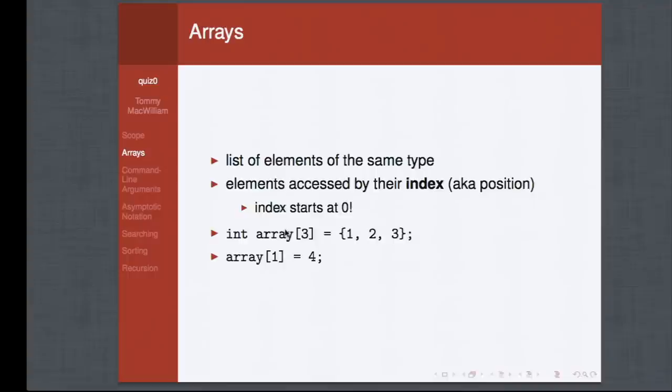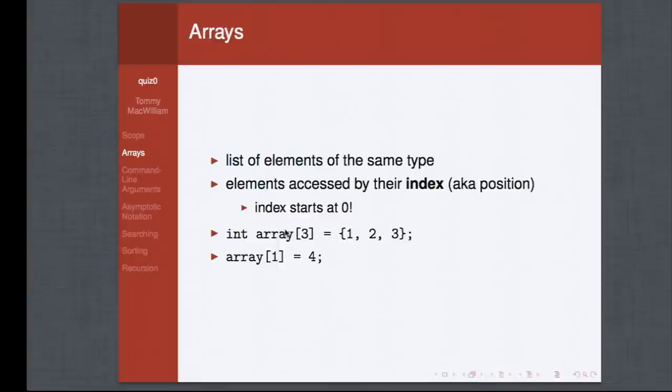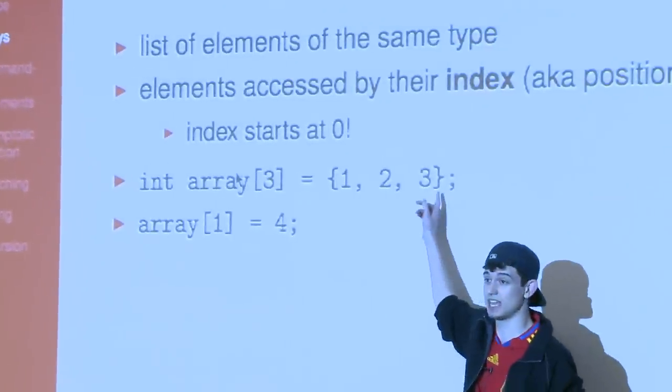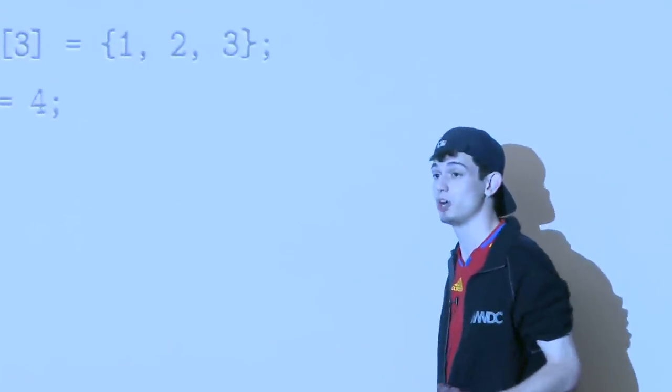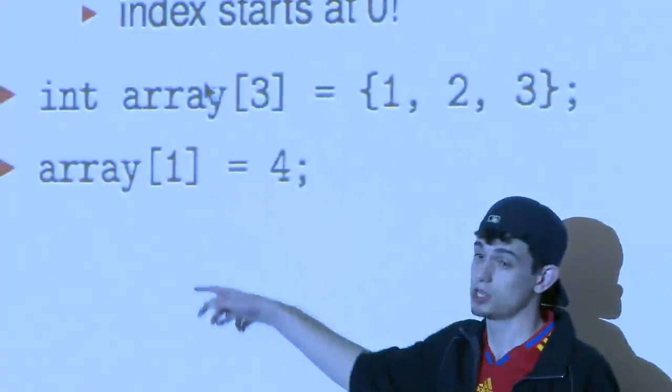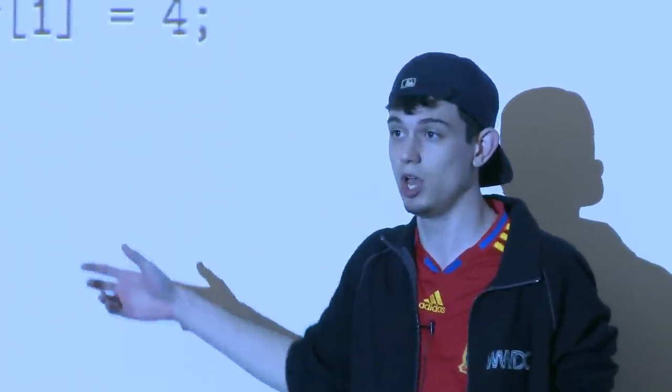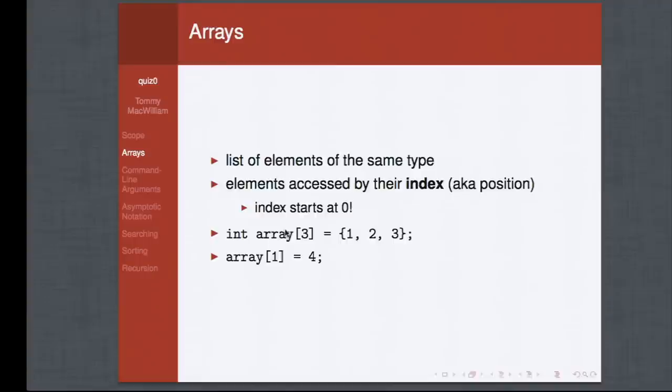Arrays are simply lists of elements of the same type — in C, all elements must be the same type. You can declare an array like: int array[3] = {1, 2, 3}; the size 3 is optional if you specify all elements. To get or set a value: array[1] = 4 sets the second element (remember indexing starts at 0). To read it: int x = array[1]. So elements are accessed by their index — their position — starting at 0.